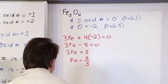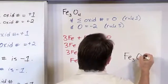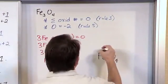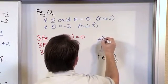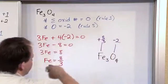So the way that you would write this down is Fe₃O₄. The oxidation number for iron is 8/3, and the oxidation number for oxygen is negative 2. And that's what you would circle on your test.